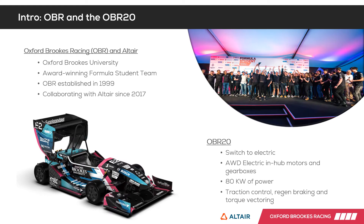Oxford Brookes Racing is an award-winning formula student team established in 1999, with the goal of designing, manufacturing, and racing a single-seater race car in engineering design competitions held across the world. We first started collaborating with Altair back in 2017, where the first titanium upgrades were designed with HyperWorks. The SLM manufacturing method was used, allowing us to design hollow sections and reduce weight. In 2018, new upgrades were designed and topology optimization was used to a great extent, saving up to 51 percent of the mass. We raced for two years with these upgrades and had two very successful seasons.